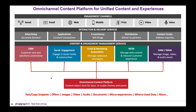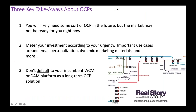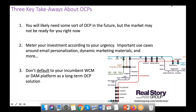Takeaways on what we call OCP — omni-channel content platform: all organizations are going to need this in the future, but the market may be a little young right now. Meter your investment according to your urgency. We're seeing important use cases around email personalization and dynamic marketing materials. Don't default to your incumbent web content management or DAM platform as a long-term OCP solution. There's a whole checklist of requirements — including object orientation and data and text as first-class elements — that makes an OCP effective.